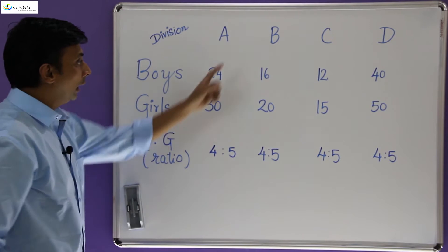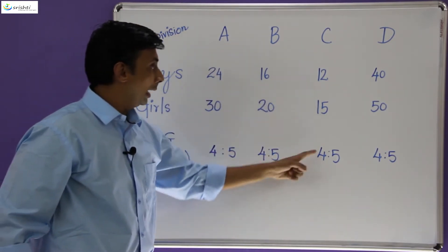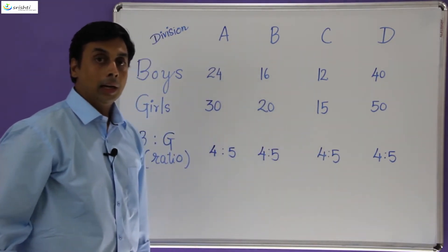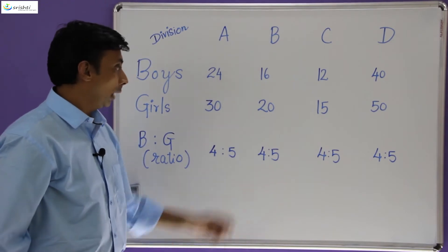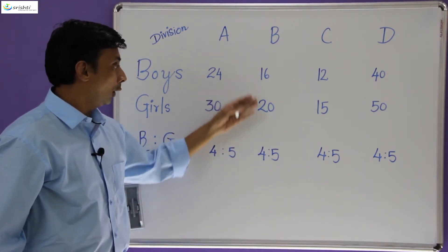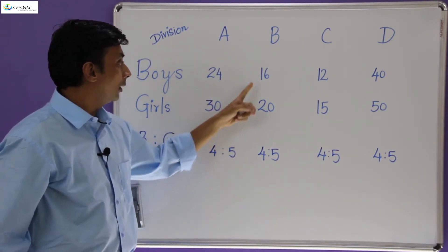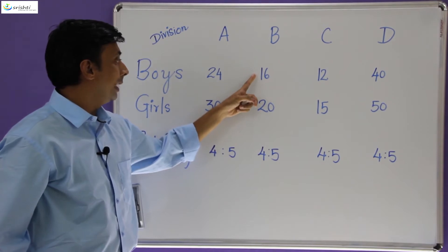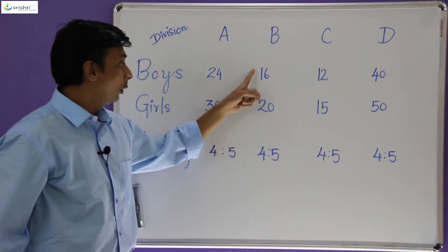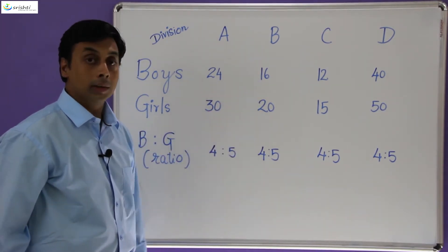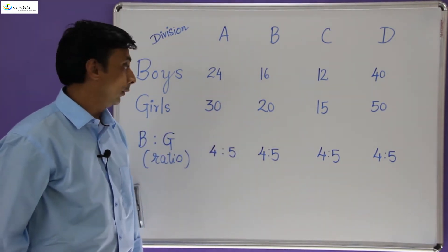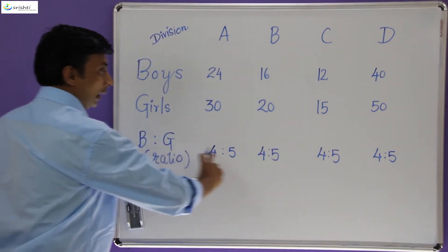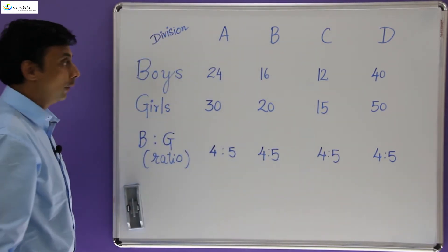Similarly, in each section you will notice that the ratio of boys to girls is 4 is to 5. You can try this on your own — if you take the ratio of boys to girls in each section, you will find that the ratio is 4 is to 5. So I have written the ratio of boys to girls in the last row, which is 4 is to 5.